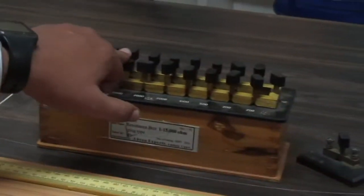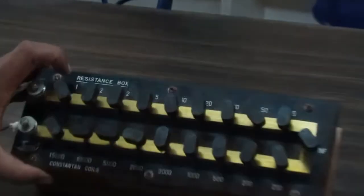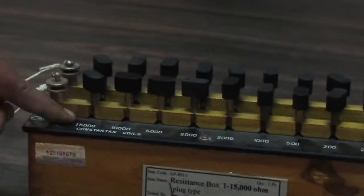This is the high resistance box. We call it high resistance box because its minimum value is 1 ohm and the maximum value is 15,000 ohms.